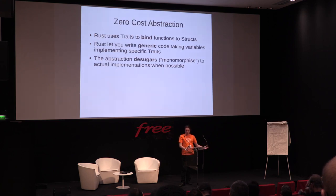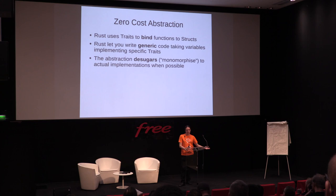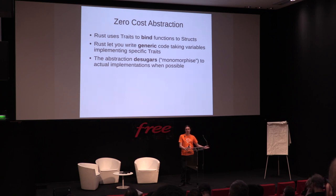What I mean by zero-cost abstraction: Rust is not an object-oriented language. In Rust, you have a concept close to the Java interface called a trait. We can leverage traits to write generic code — any function can take a variable implementing some trait, and any kind of structure implementing that trait will work with that code.